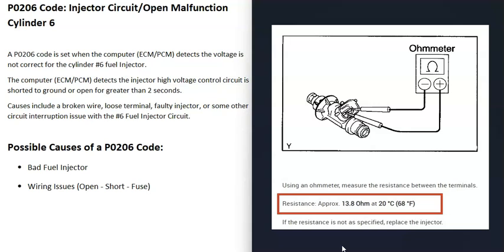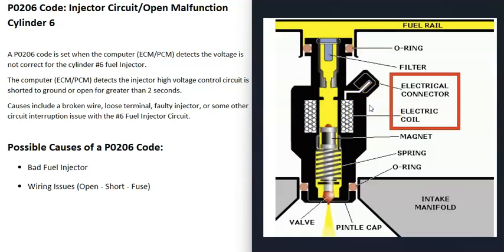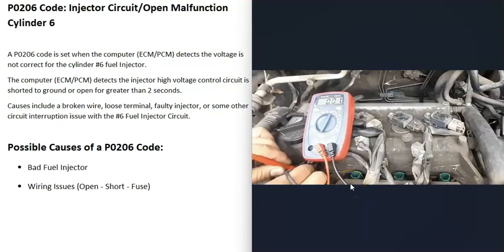If the injector is not within the specified ohms range, you know it's bad and needs replacement. If you can't find the spec, test a working injector on another cylinder, note its ohms value, then compare it to cylinder six. These fuel injectors work by having a small coil inside that the computer sends voltage to — that energizes a magnet which lets fuel into the cylinder. Testing that coil confirms whether the electrical part of the injector is good.